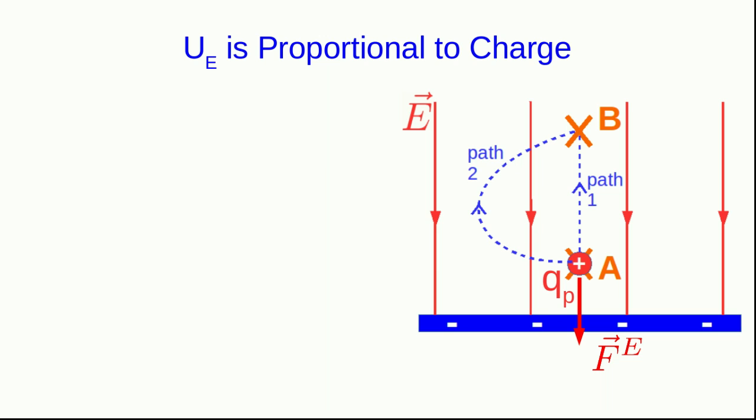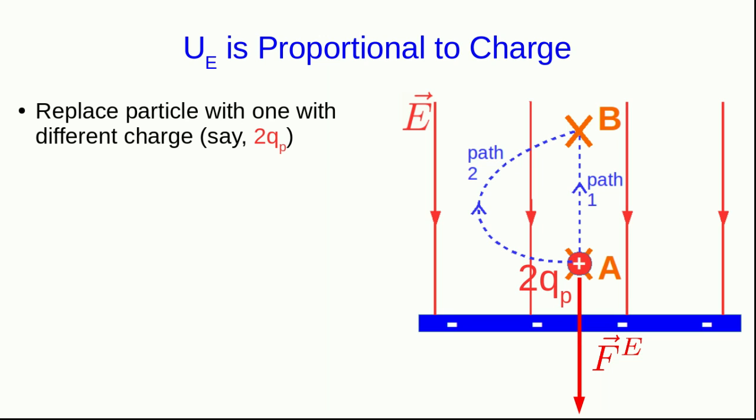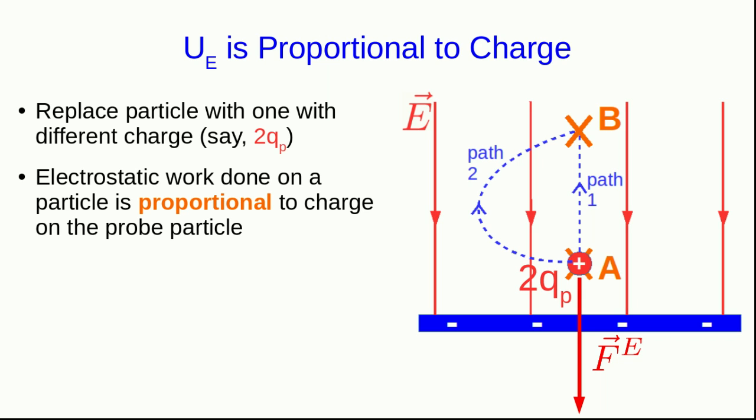Now, suppose this charged particle that we're moving from point A to point B has some amount of charge on it, QP. QP? Why QP? Well, that's standing for probe charge, which should be ringing some bells. What happens if we double the amount of charge on our probe particle? Well, we know that that's going to double the size of the electric forces acting on it. And the work done on it is also proportional to the size of the force doing the work. And so, we can see that electrostatic work done on this particle must be proportional to the charge of the particle.